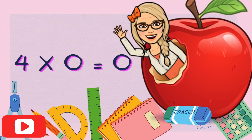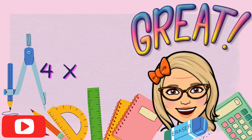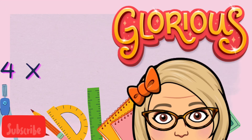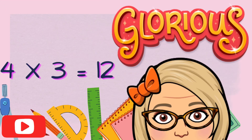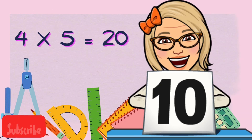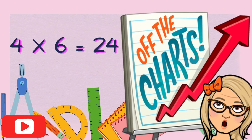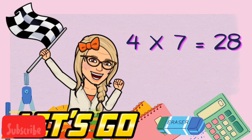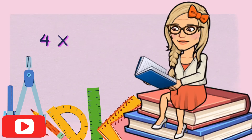Four times zero is zero. Four times one is four. Four times two is eight. Four times three is 12. Four times four is 16. Four times five is 20. Four times six is 24. Four times seven is 28.